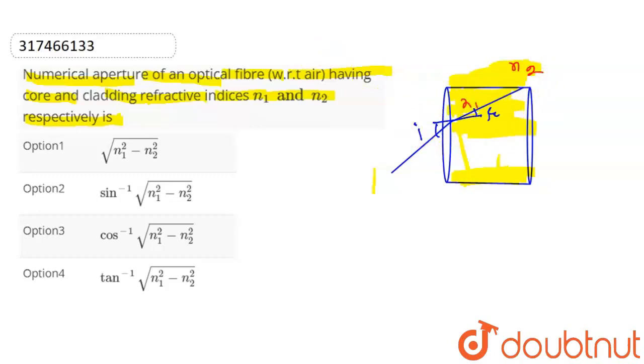We call numerical aperture the minimum angle. Actually, this value is the maximum value. The particular angle of incidence is maximum so that light propagates. We call it numerical aperture. If I apply Snell's law to the surface, you get 1 times sin i maximum equals n1 times sin r.